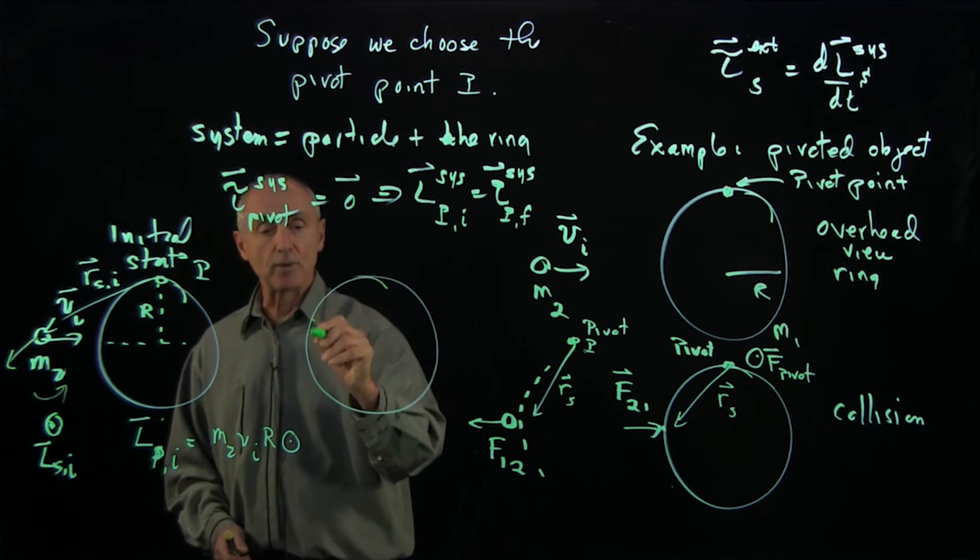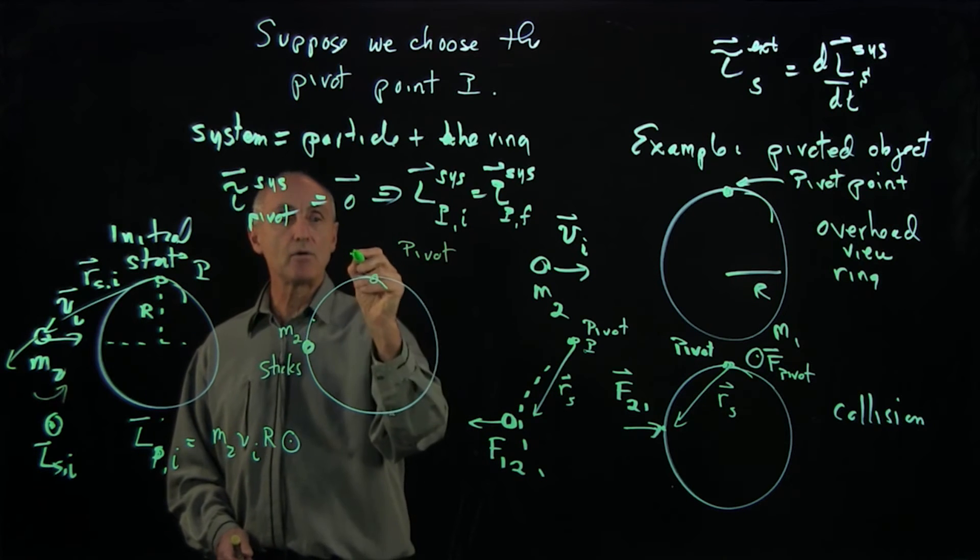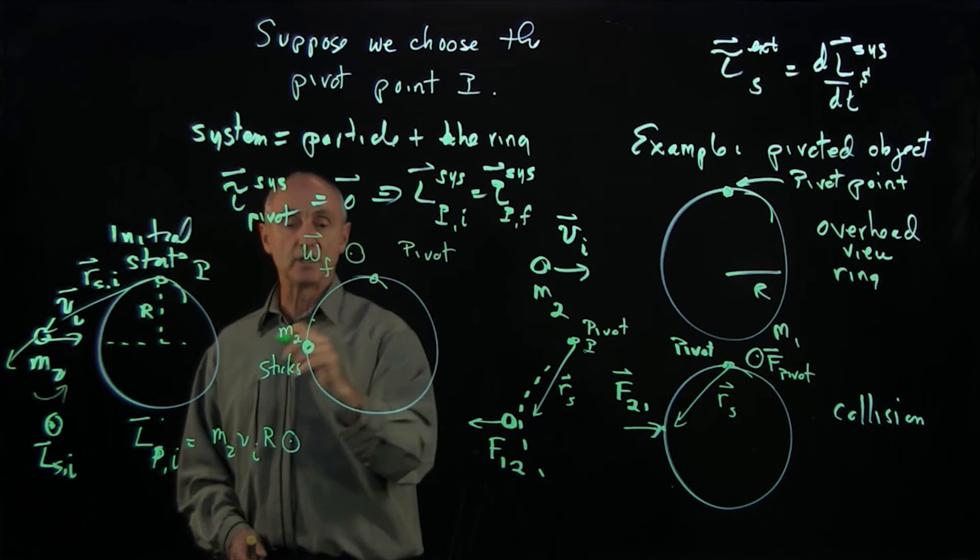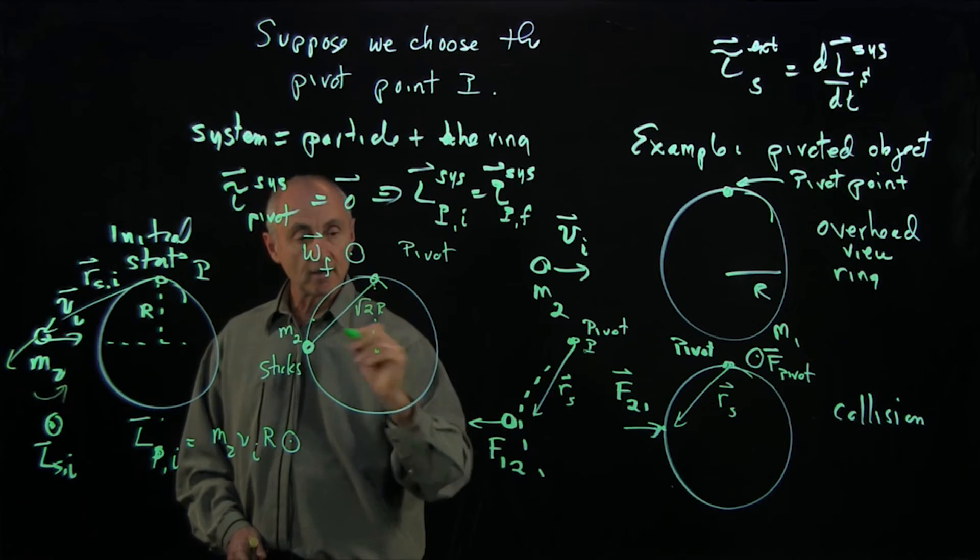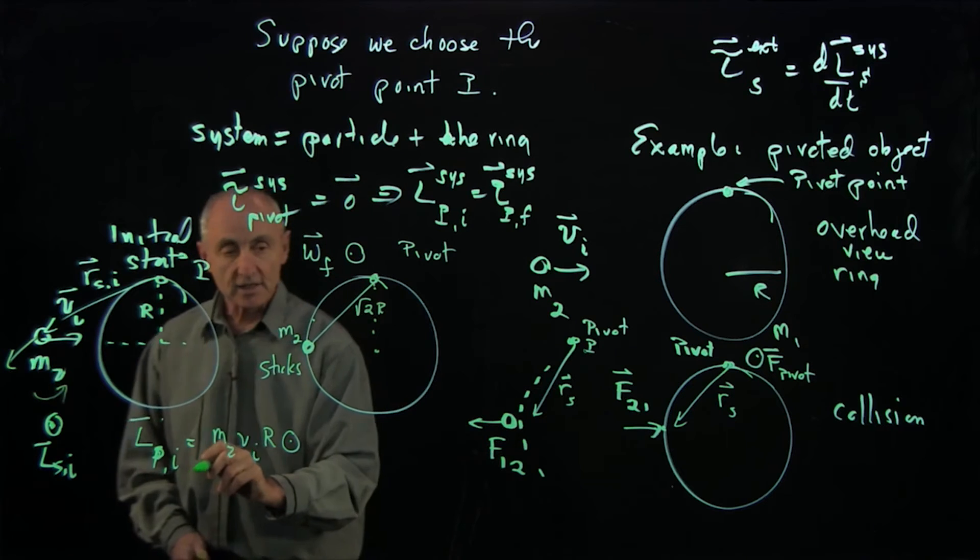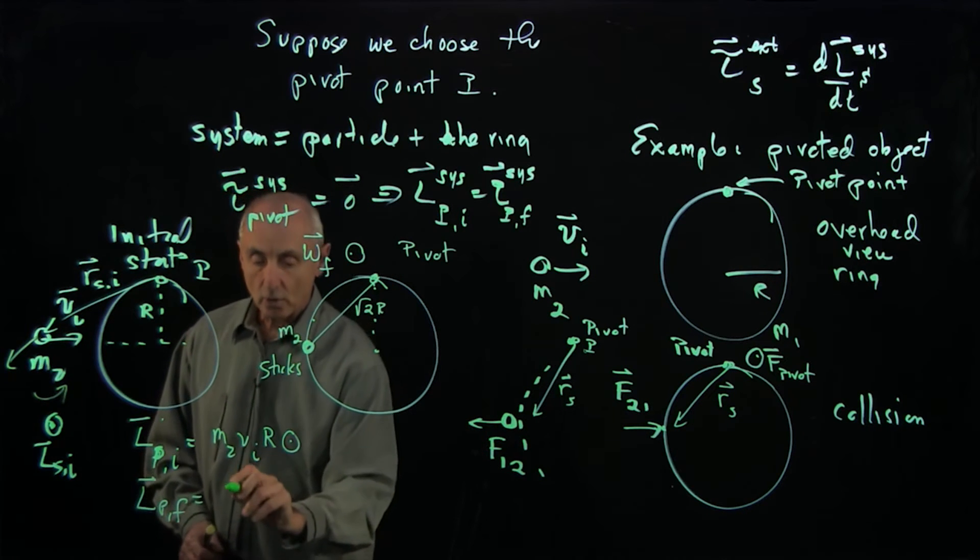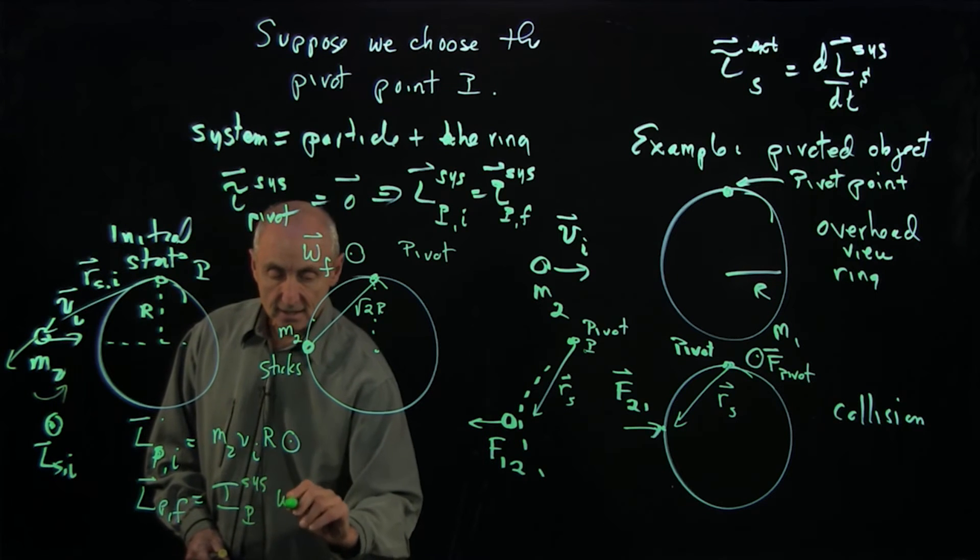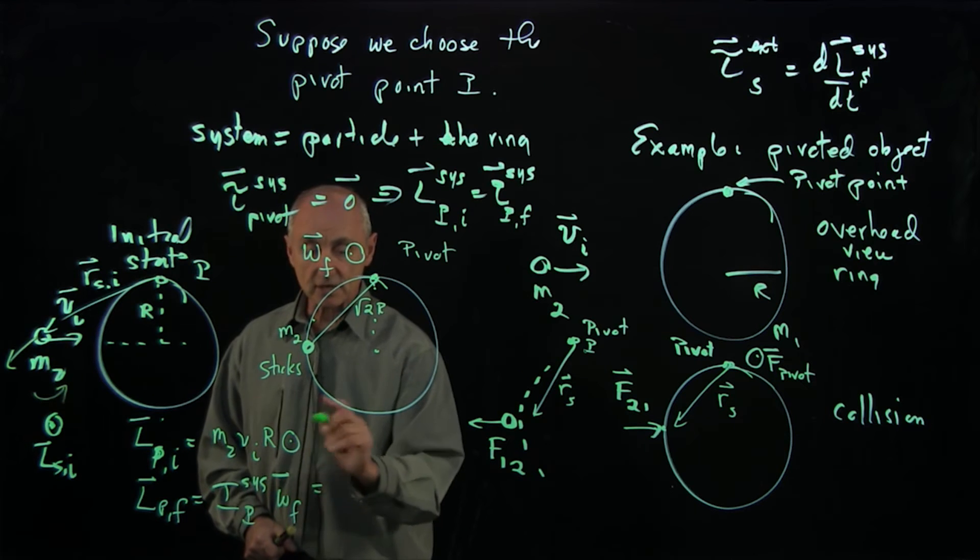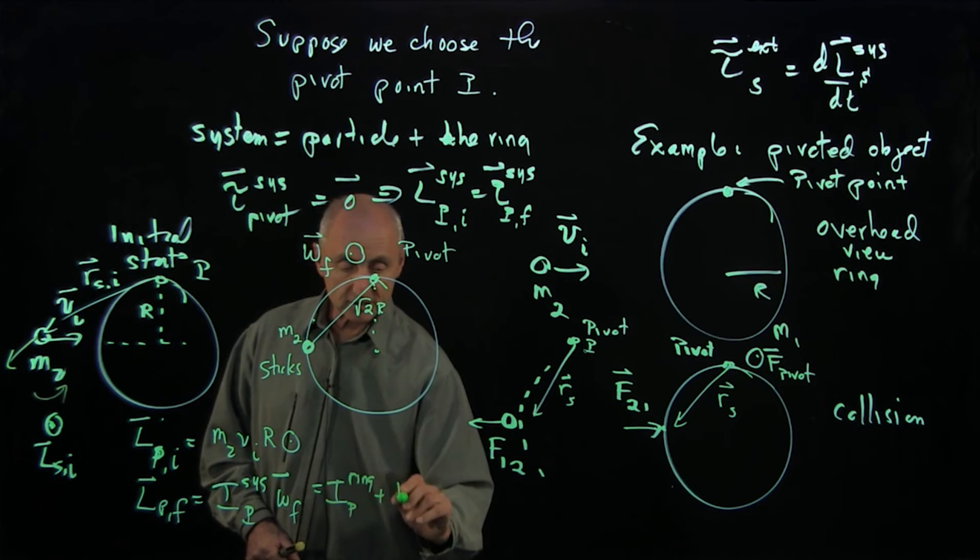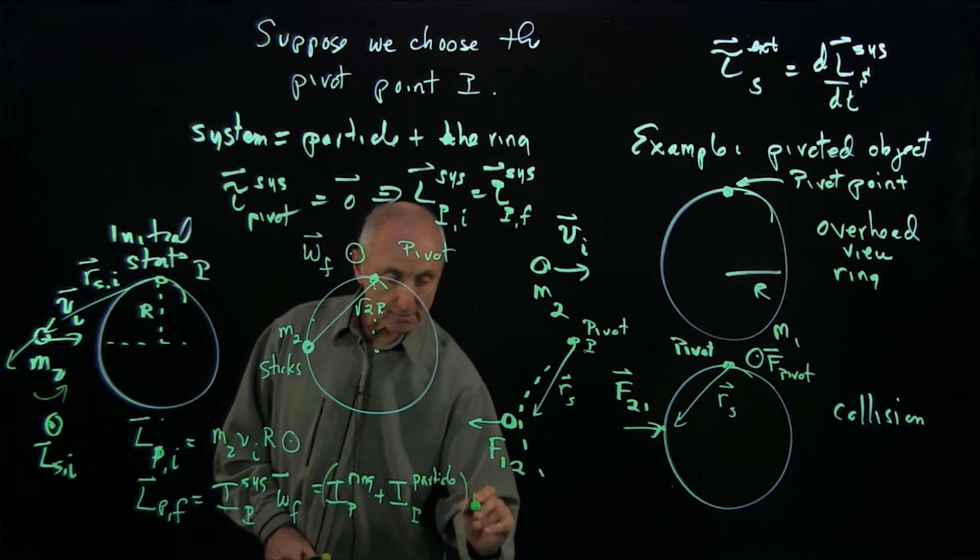Now, the final angular momentum, let's imagine that it sticks. So we have M2, pivot. And now our ring is going to be rotating with some omega final, because this object hits it. And notice that this object is a distance root 2R from the pivot point. So the final angular momentum can be two different pieces. You can think of this as a system where we have I of the system about P times omega final, because now it's just a rigid body. And the angular momentum of the system is consisting of two pieces. It's the angular momentum of the ring about the pivot plus the angular momentum of the particle about the pivot times omega final.